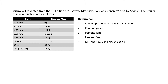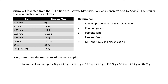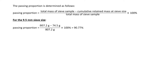Before we can do anything, the first step is to determine the total mass of the soil sample. This is just by taking the sum of each retained mass for each sieve size. In this particular case, it turns out to be 807.2 grams. Once we do that, we can determine the passing proportion. It is just the total mass of the sieve sample minus the cumulative retained mass at that sieve size, divided by the total mass of the sieve sample, which is 807.2 grams.